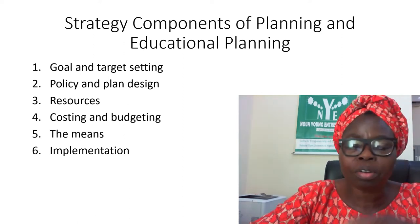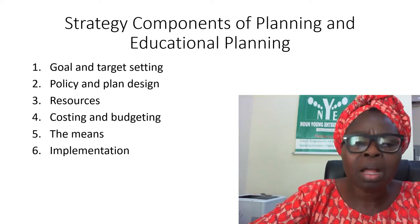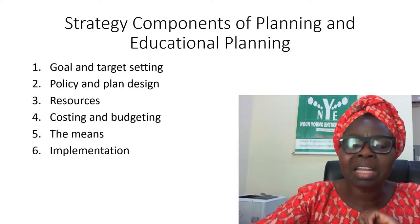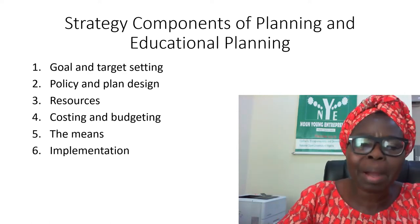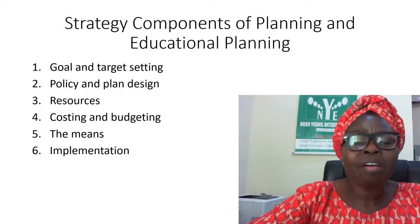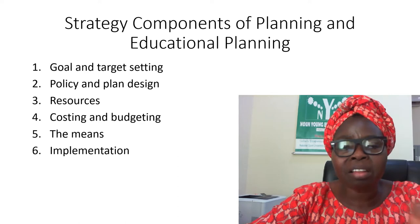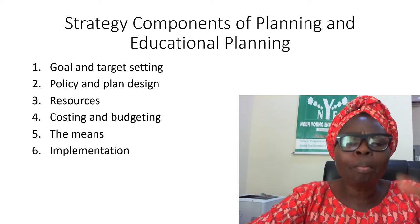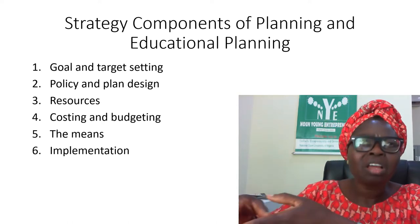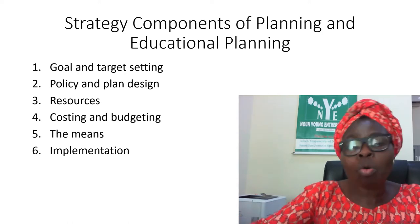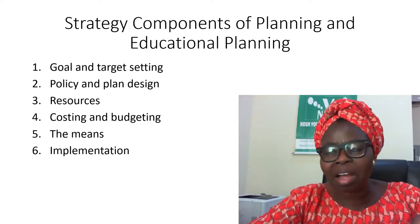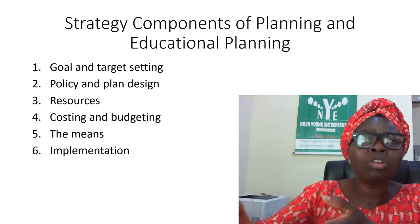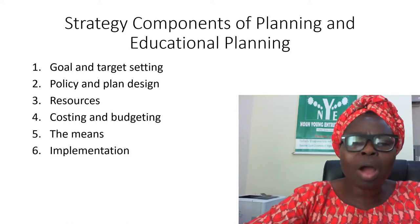For example, the 6-3-3-4 system failed — why did it fail? The planning procedure may have had faults. At the point of planning, they would have been able to determine whether there was sufficient manpower to man the classrooms. The facilities and equipment were available, but there was no human power to man those facilities and no teachers to teach using them. So what should have happened during planning was to find out whether the human resources were available, and if not, how they would have been trained and when implementation would begin.